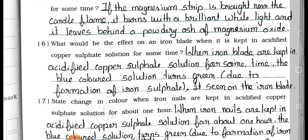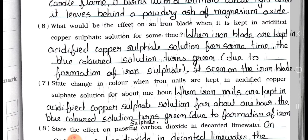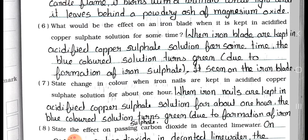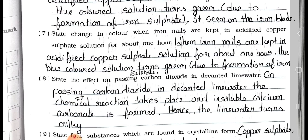Question number 6: What would be the effect on an iron blade when it is kept in acidified copper sulfate solution for some time? Answer: When iron blades are kept in acidified copper sulfate solution for some time, the blue coloured solution turns green due to the formation of iron sulfate.